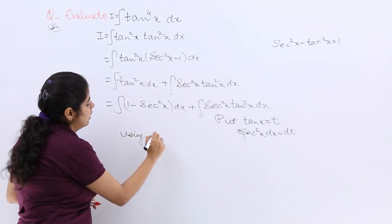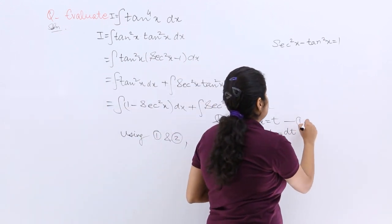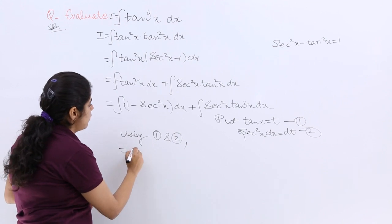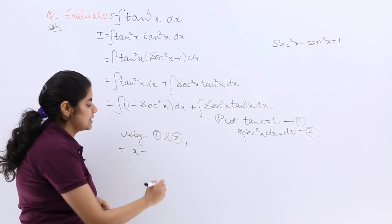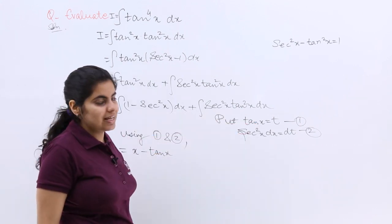So using equations 1 and 2, I have 1 dx is x minus secant square x dx is tan x plus secant square x tan square x.